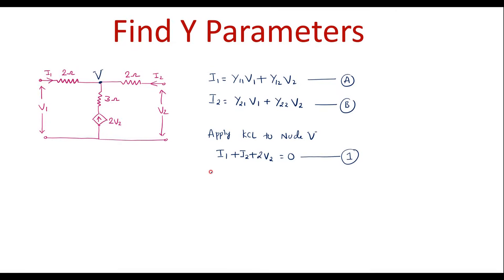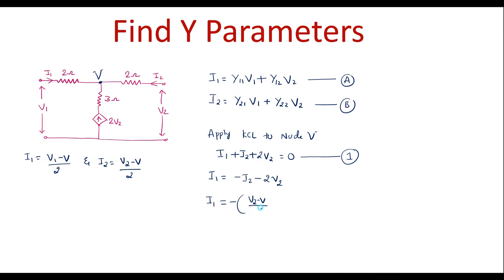From equation 1, I can write I1 is equal to minus I2 minus 2V2. Now I can simplify this: current I1 is equal to (V1 minus V) divided by 2, and current I2 is equal to (V2 minus V) divided by 2. Therefore, I2 is minus of (V2 minus V) divided by 2 minus 2V2. Simplifying, I can write I1 is equal to minus 0.5V2 plus 0.5V minus 2V2, or I1 is equal to minus 2.5V2 plus 0.5V. I will call it equation 2.